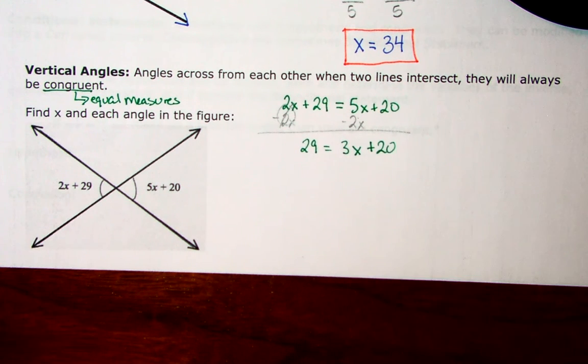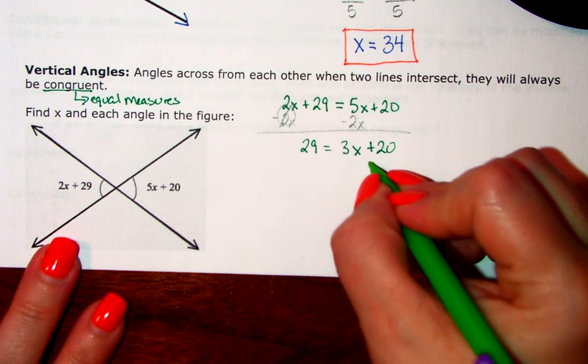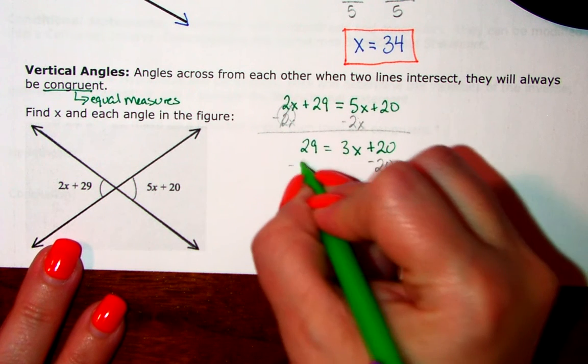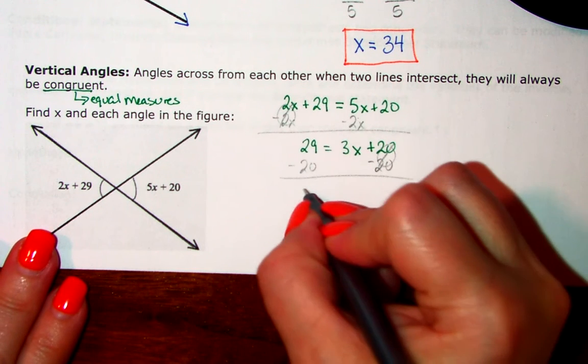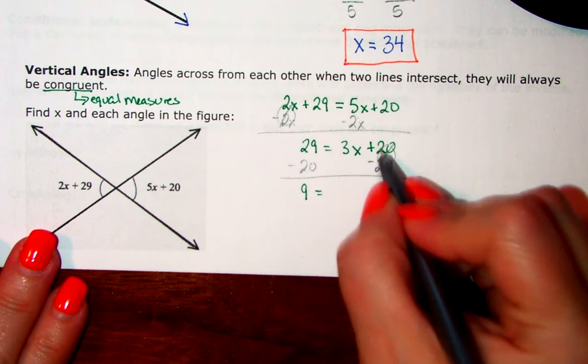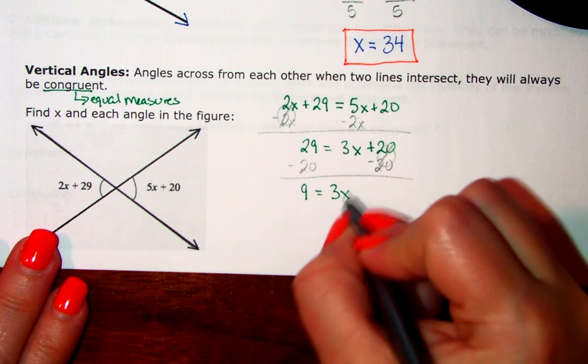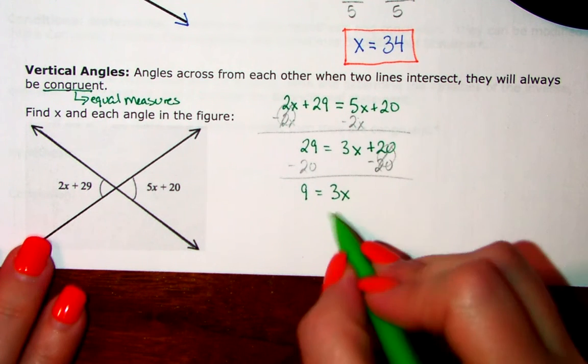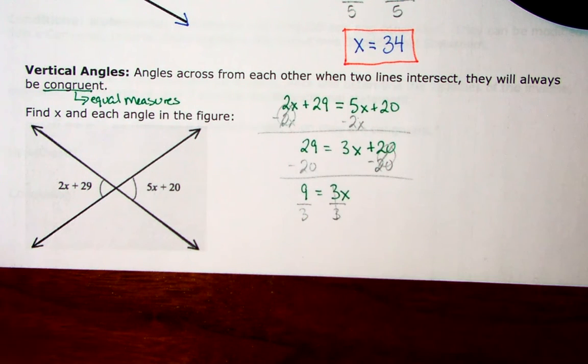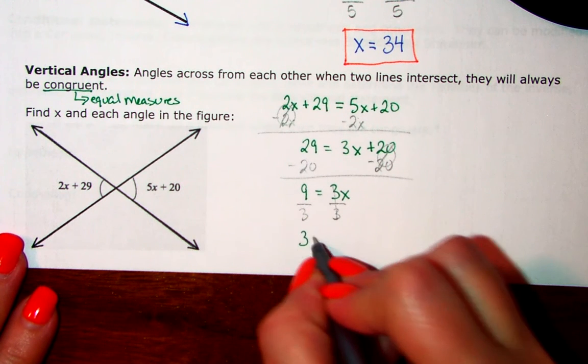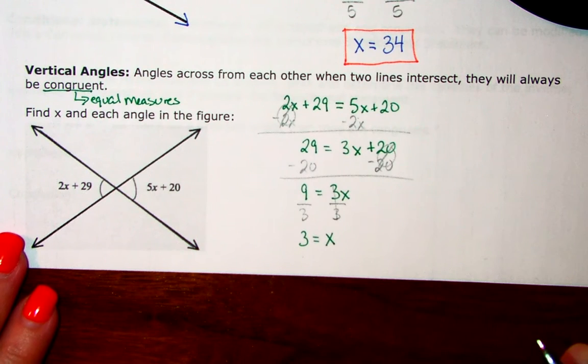Now I need to get that 3x all by itself, so I'm going to use my subtraction property of equality. 29 minus 20 is 9, 3x plus 0 is just 3x. I'm going to divide both sides by 3, which is going to leave me with 3 equals x.